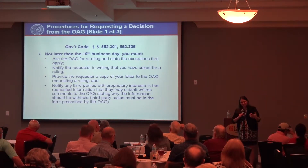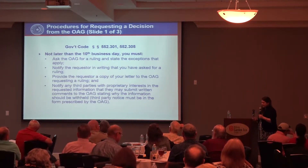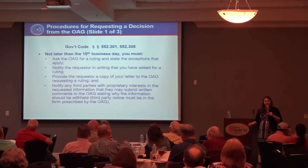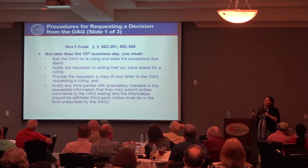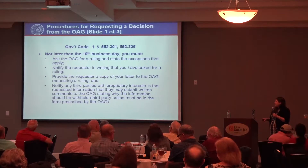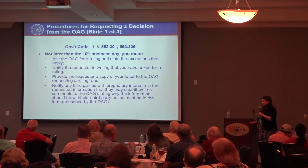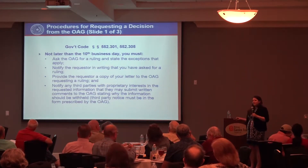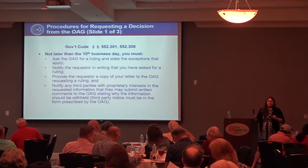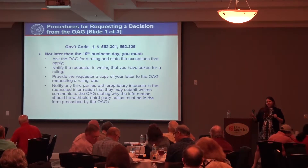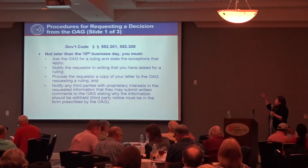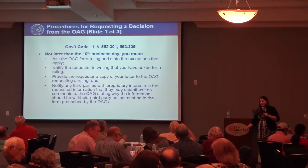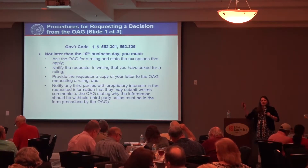Once you've determined you need to request a ruling, the procedures are found in sections 552.301 and 552.305. Not later than the 10th business day, you need to ask us for a ruling and state the exceptions that apply, notify the requester that you've asked for a ruling and provide them a copy of your letter to us, and notify any third parties who may have a proprietary interest, such as in proposal situations.